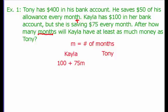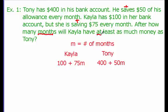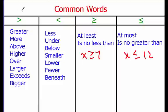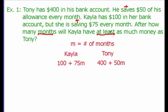Tony has $400 and is saving $50 every month, so his expression is 400 plus 50M. We want to know how long it takes for Kayla to have at least as much money as Tony. The key phrase is "at least," which means we use a greater than or equal to symbol. So we write: 100 + 75M ≥ 400 + 50M.